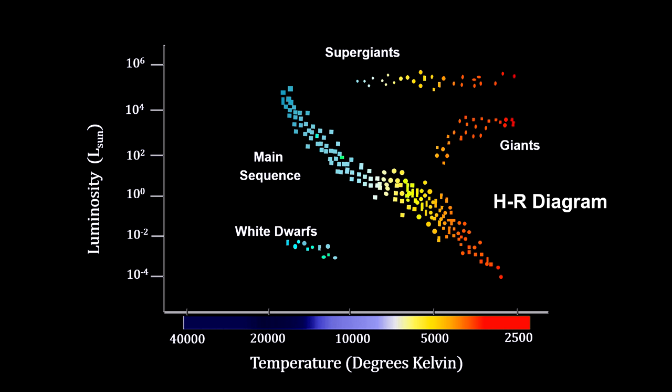Now that we understand the meaning of the HR diagram, let's see how we can use it to find out how far away a star is. For that, we need to view light as a particle and examine its spectrum.